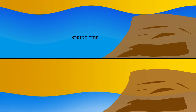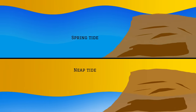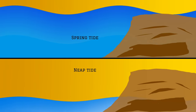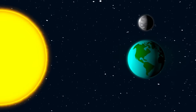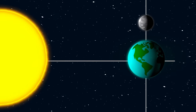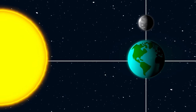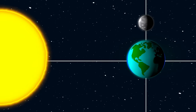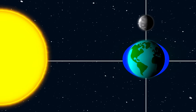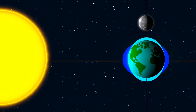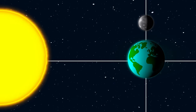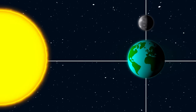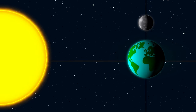Another phenomenon is neap tide, which means there will be fewer waves and tides. When the moon is perpendicular to the sun and the earth, the bulges caused by the sun and those caused by the moon balance each other. So the tides are lower than on other days.